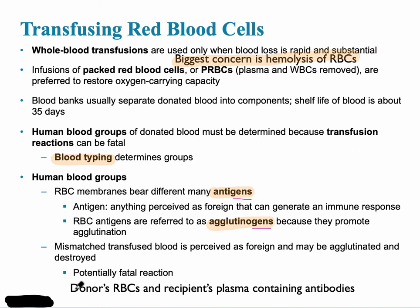You need to remember the donor's red blood cells — what's going to be donated to the recipient — and then the recipient's plasma, which contains the antibodies. The antibodies are usually Y-shaped proteins that have the ability to bind and attach to antigens from the donor red blood cell.